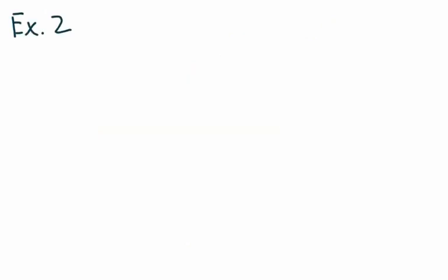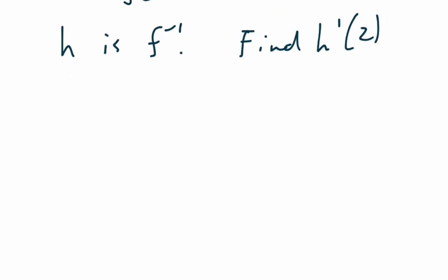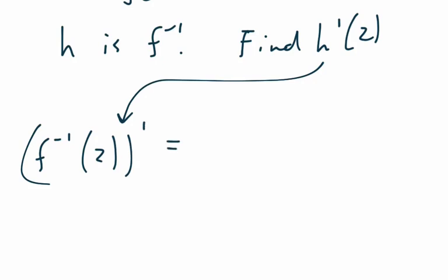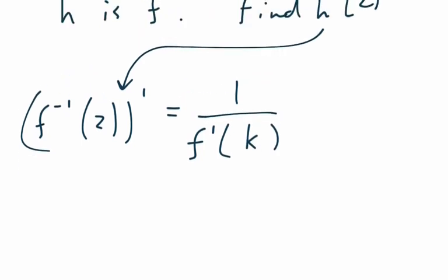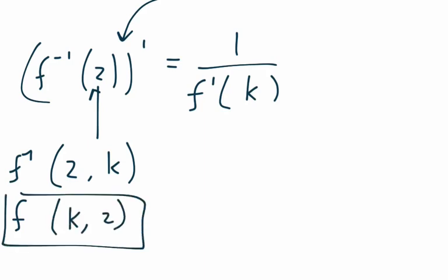New problem. Example 2. And this one's a little bit harder. Let's say that we have f of x equals x squared plus x, and we know that h is the inverse of f. Find h prime of 2. So, because h is the inverse, this is the same as asking f inverse prime of 2, and so we're going to do, this is going to be 1 over f prime of the k value.